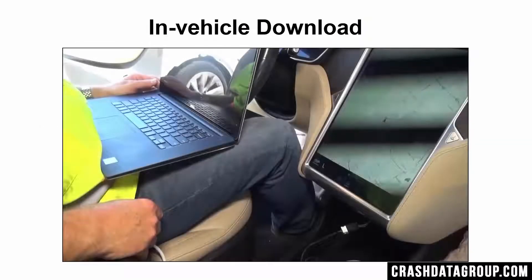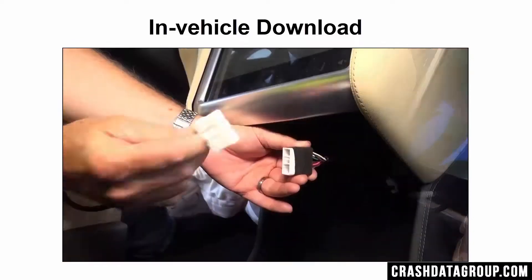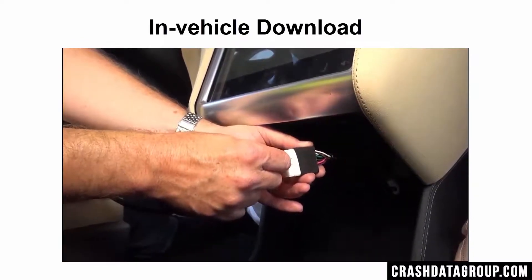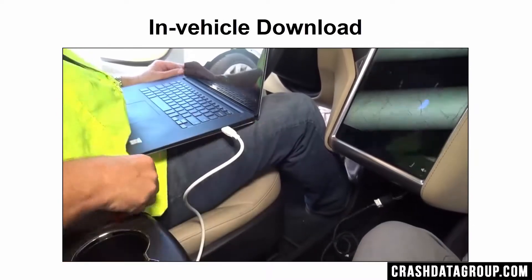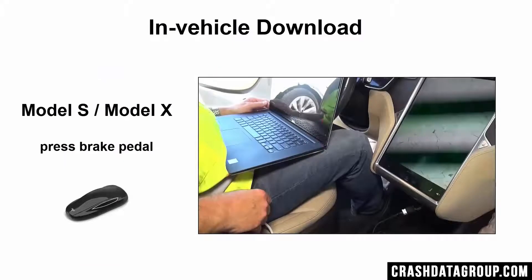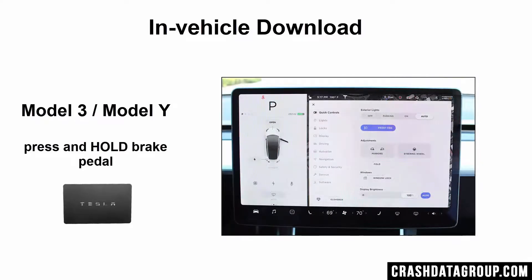Open the Tesla EDR retrieval program on your computer. Connect the appropriate connection cable to the PCAN device. Plug the in-vehicle connection cable into the data connector of the vehicle, then plug the PCAN USB cable into a USB port on your computer. For a Model S or Model X, press on the brake pedal with the key fob inside the vehicle to power up the car's electrical system — the instrument cluster display screen should turn on. For a Model 3 or Model Y, sit in the driver's seat and swipe the key card on the key card reader to the rear of the cup holders in the center console, then press and hold down the brake pedal until the center screen displays the PRND icons.